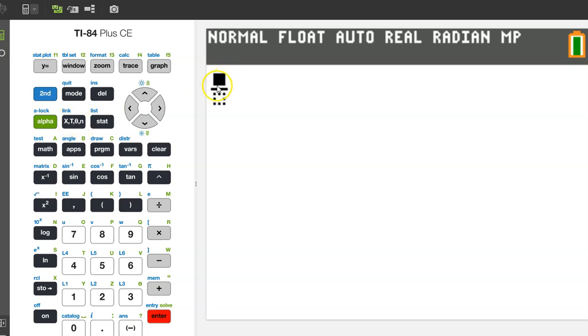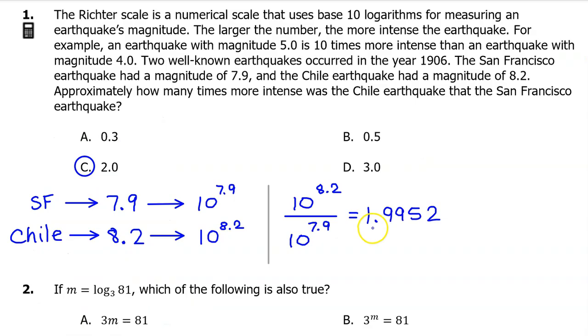Anyway, we need 10 to the 8.2 power, so we do 10 to the 8.2 power divided by 10 to the 7.9 power. 1.9952 is closest to 2.0, so the answer is C.